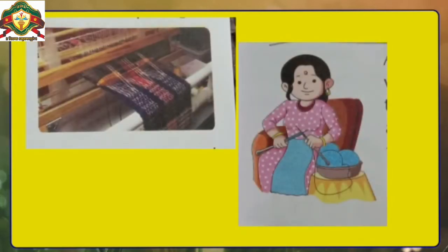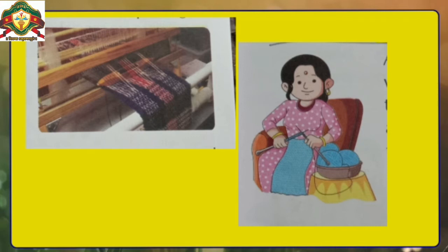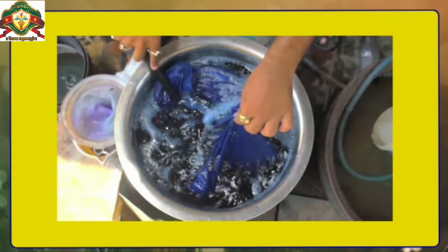The second step is weaving and knitting. Weaving is done in big machines called looms. Weaving is a process in which yarns and threads are interlinked to form a fabric. Knitting is another method in which yarns are knitted together to make a fabric. After that, the fabric is given finishing, and then it goes for dyeing, which means coloring.